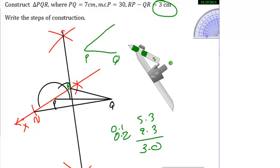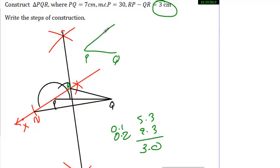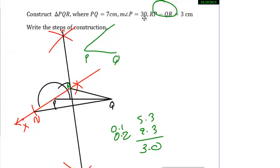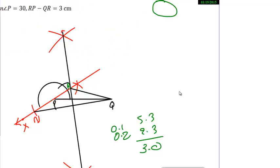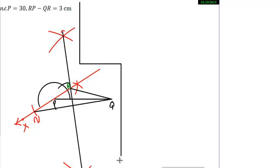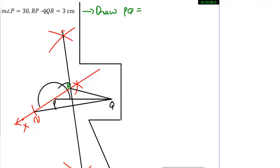Now let's write the steps of construction. They are again very easy. Let's start writing steps of construction and let's draw the line here so that we get enough space. First point is regarding draw. What do we say? Draw PQ is equal to - PQ measurement was somewhere 6 or 7 - it was 7cm.